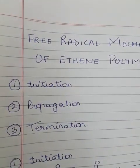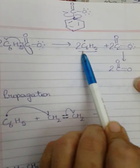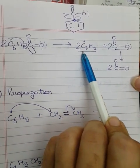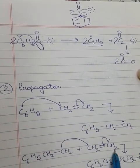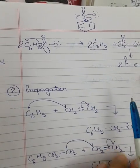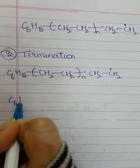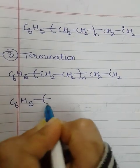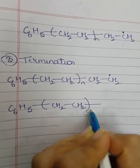Now in the starting during the initiation we had two radicals, two phenyl radicals, out of which one we have taken and started the propagation. Another also do the same propagation, so that means we will get two such radicals like this.